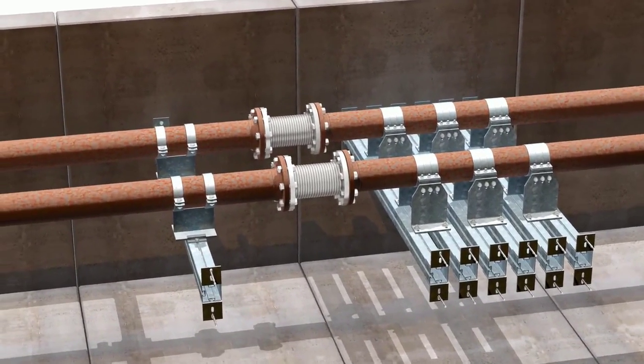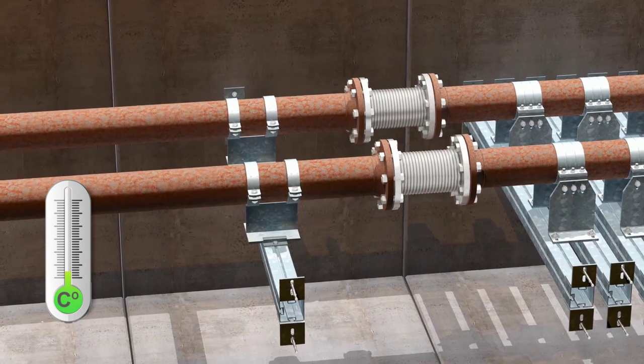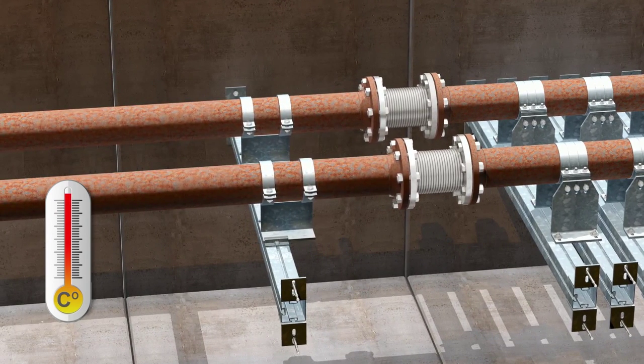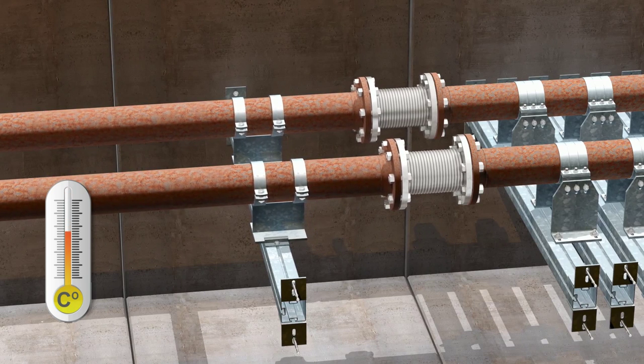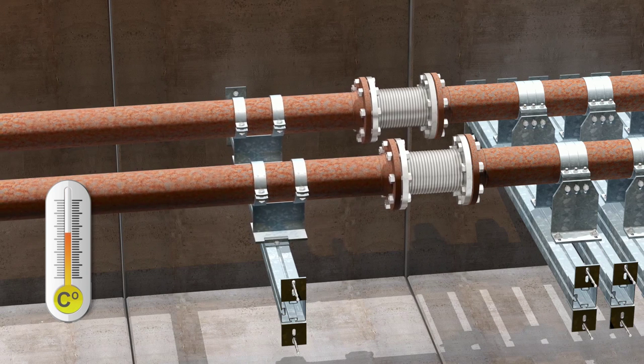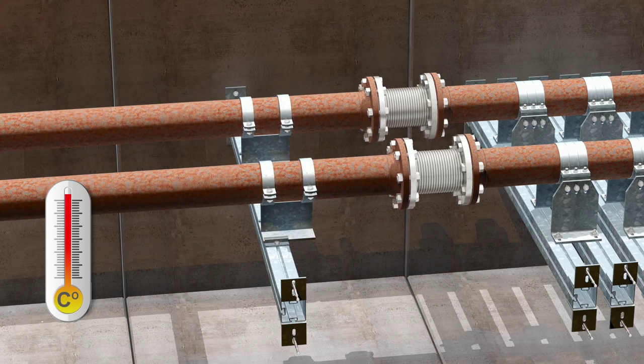The pipeline expansion point absorbs temperature-related changes in length of the pipes. The MUPRO pipe slide type TP2 with two clamps absorbs the movement of the pipe in a controlled way and transfers them to the expansion compensator.